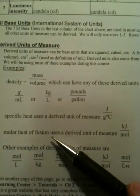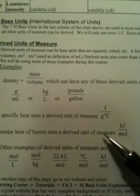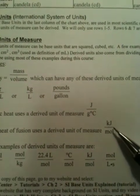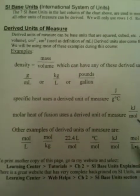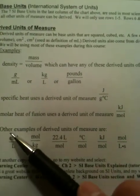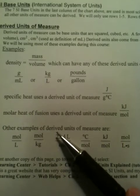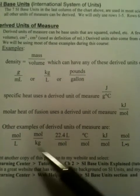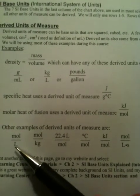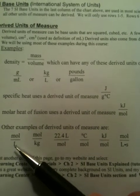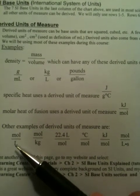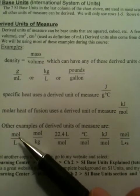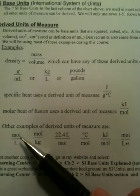Now molar heat of fusion is a derived unit, which is kilojoules per mole. And then down here, these last examples are other examples of derived units of measure. So you have moles per liter. And I think I talked about moles in the first video and what that number is. 6.02 times 10 to the 23rd.